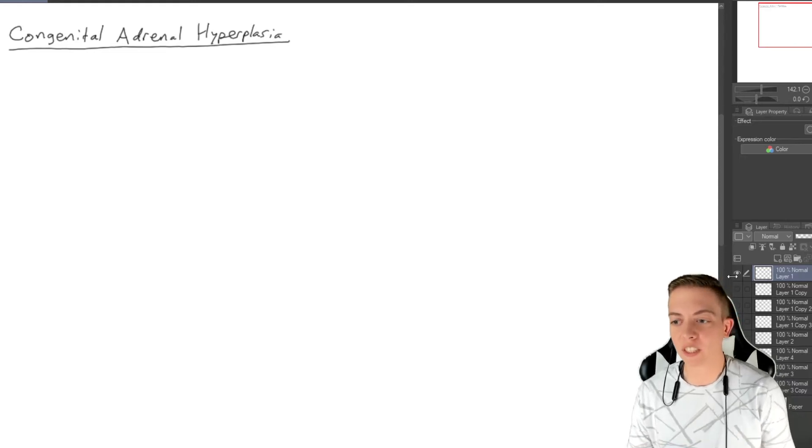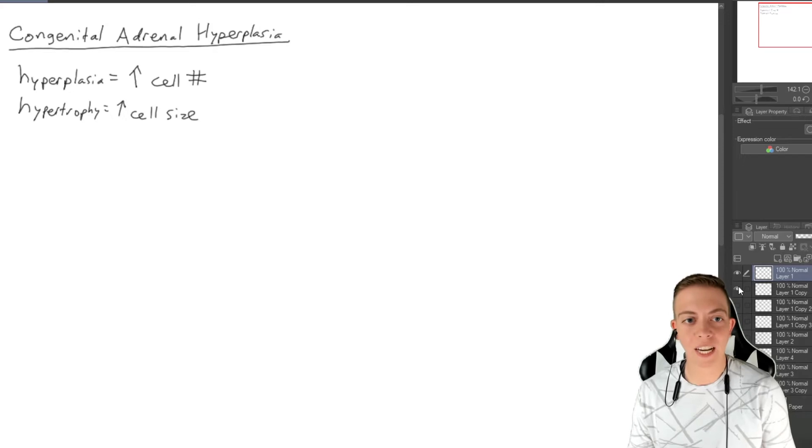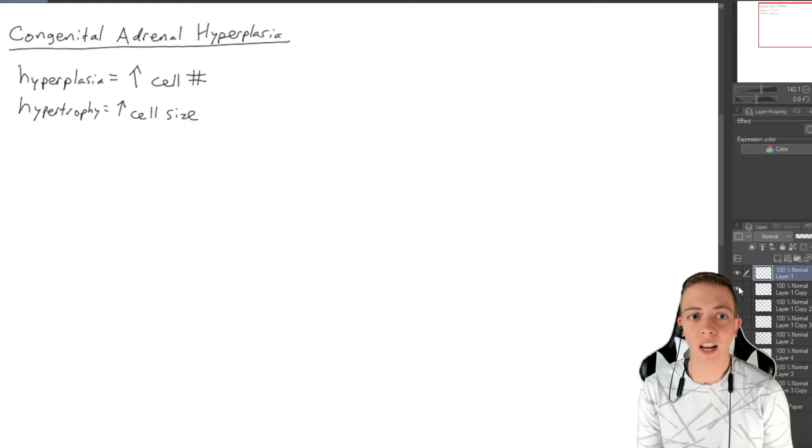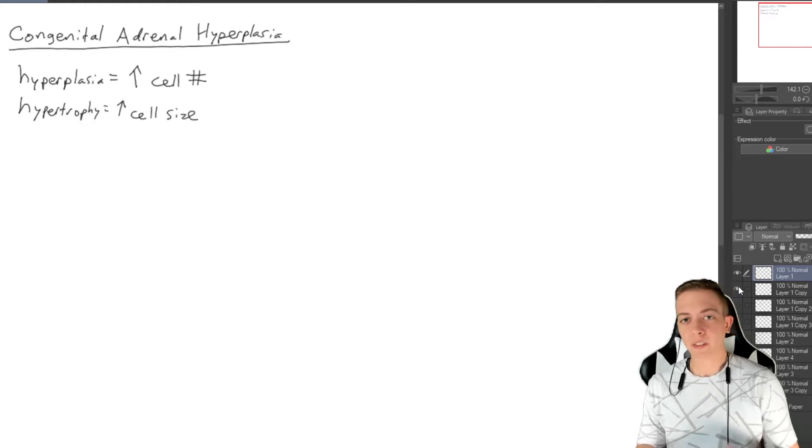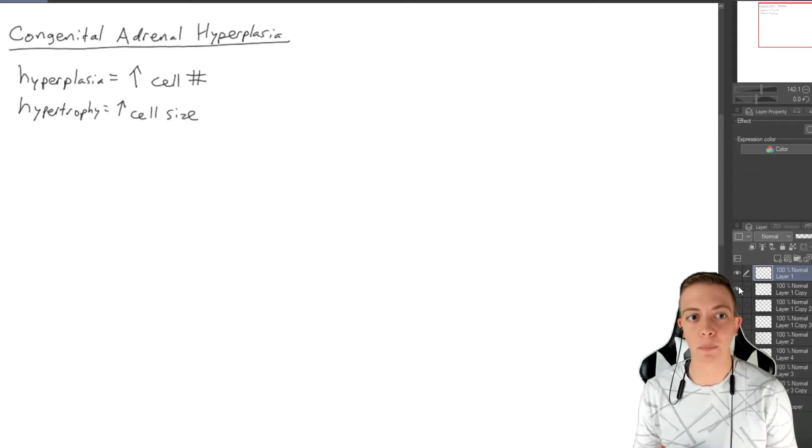Hyperplasia is just a fancy term meaning an increase in cell number. So when you have, for example, a 21-hydroxylase deficiency, you get a decrease in aldosterone and a decrease in cortisol. This is going to cause some feedback mechanisms in the body to cause an increase in cell number, so the adrenal gland itself is going to grow. Hyperplasia is not an increase in cell size, just an increase in cell number. The cell size is going to be the same as it already was.